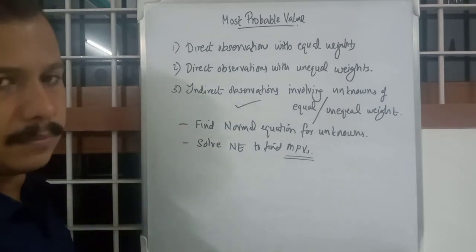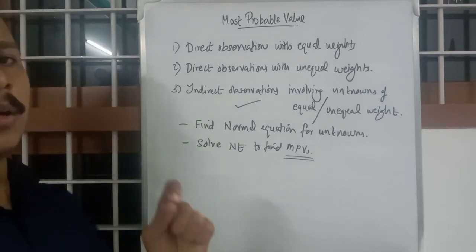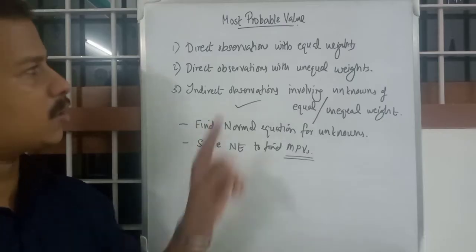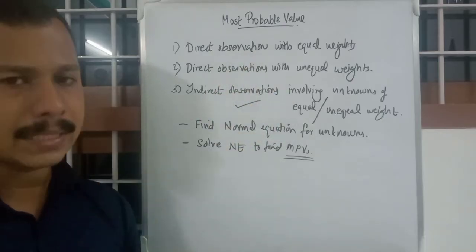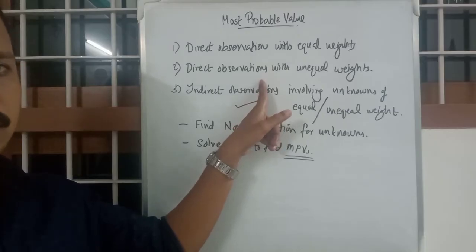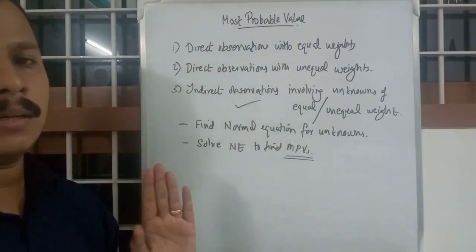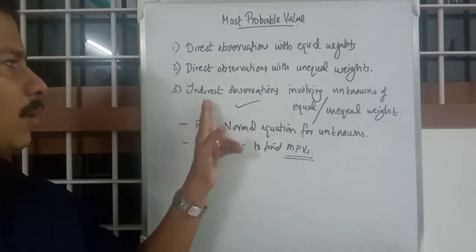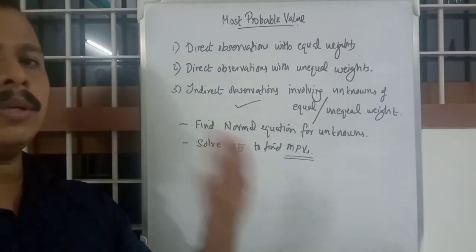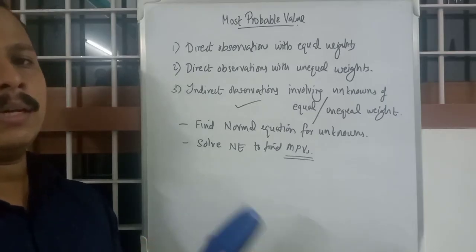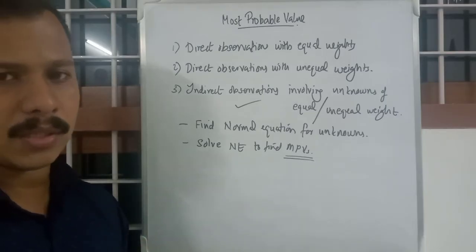For now we will stick to the third case. We move on to solving problems of the third case, because the first and second are too easy — they are just average and weighted average. Simply substitute values in the equation. The third case takes more practice, so doing more problems will make it easier to solve.